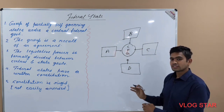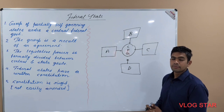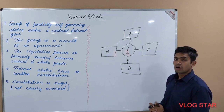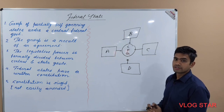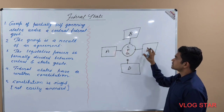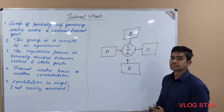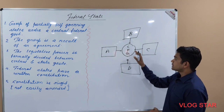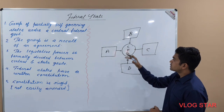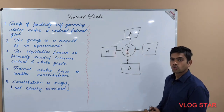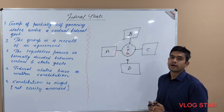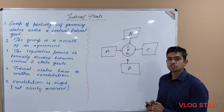Whenever such an agreement is made, it is made sure that the legislative powers are properly and formally divided between the central federal government and the constituent states. It should be clearly defined what subjects the central federal government will make laws on, and what subjects the constituent states will make laws on.